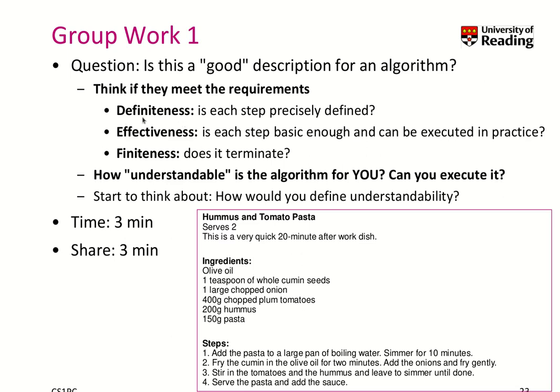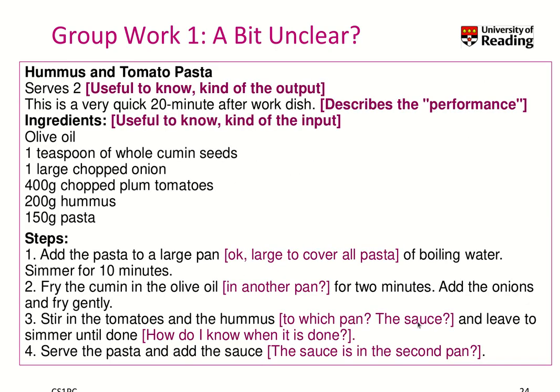So the steps are not precisely enough defined, which means definiteness is a problem. And 'leave them to simmer until done' — this is a really tough instruction. When do we know when it's done? Expert cooks may know that, but many people would struggle with this instruction. We need to define further what it would mean to be done. Finally, it says 'serve the pasta and add the sauce.' These issues give you some idea of how I would evaluate this recipe as an algorithm description.